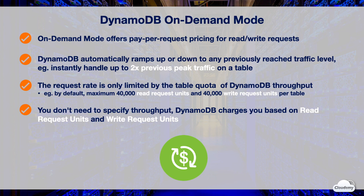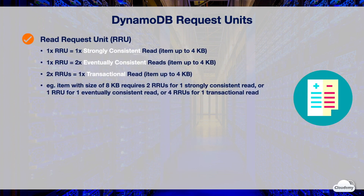DynamoDB charges read and write operations based on read request units and write request units. One read request unit represents one strongly consistent read, or two eventually consistent reads, for each item up to 4 KB in size. The total number of read request units doubles when you perform transactional reads — two read request units represent one transactional read for items up to 4 KB. For example, if an item size is 8 KB, you need two read request units for a strongly consistent read, one read request unit for an eventually consistent read, or four read request units for a transactional read.